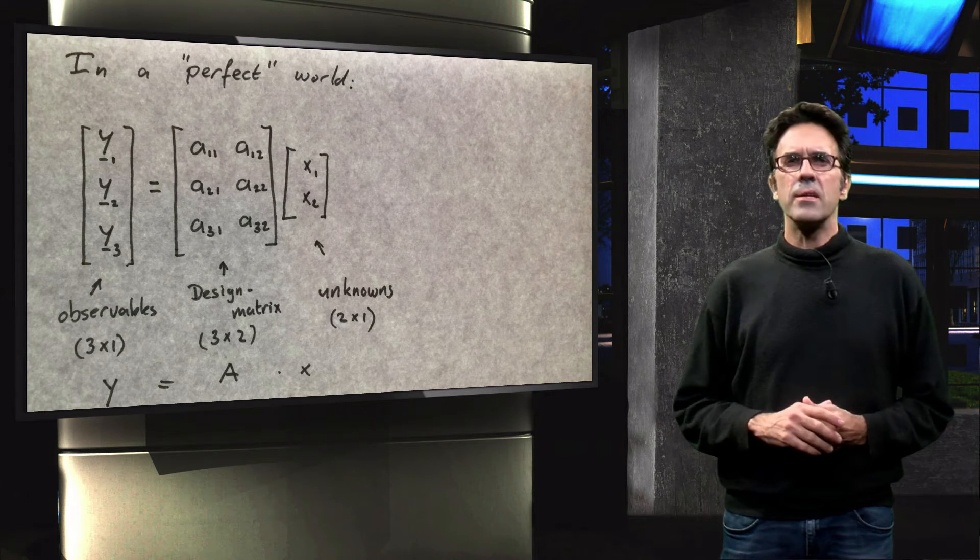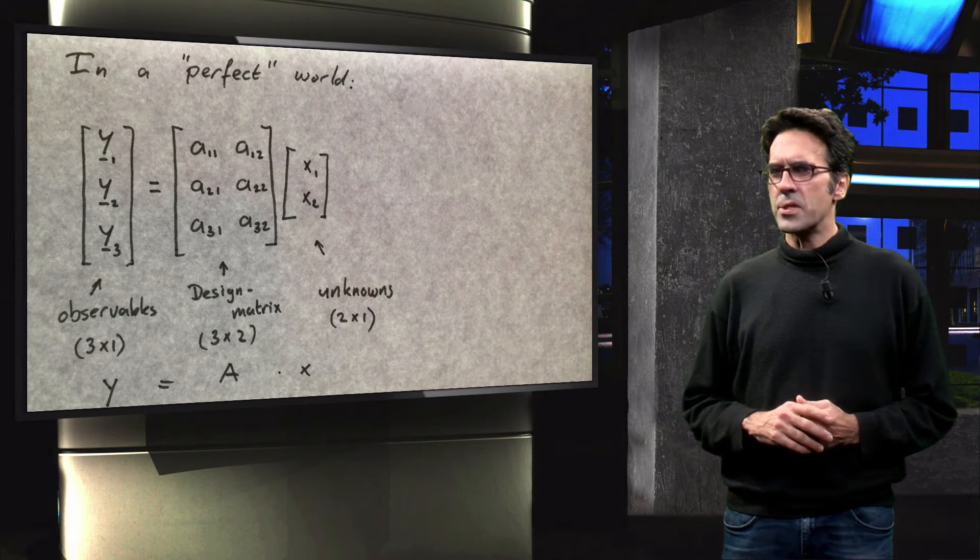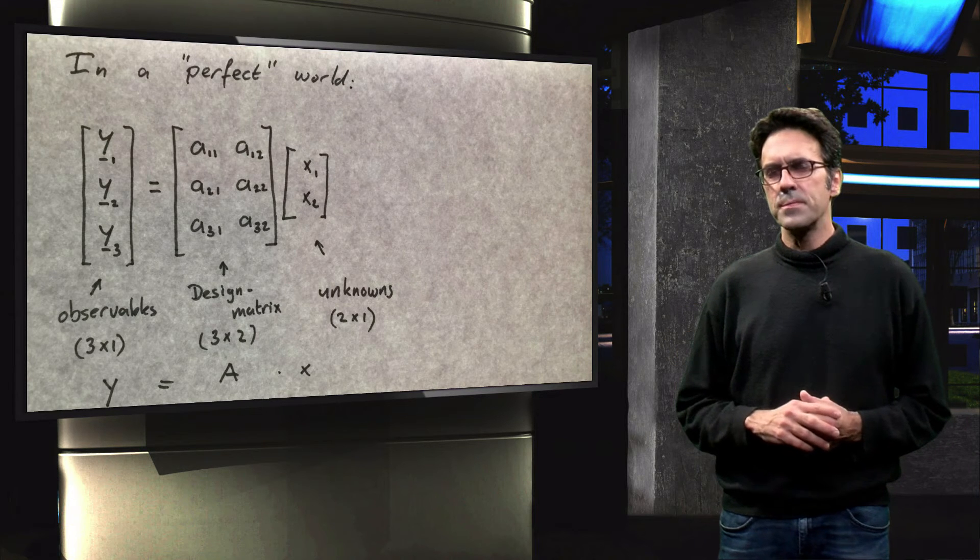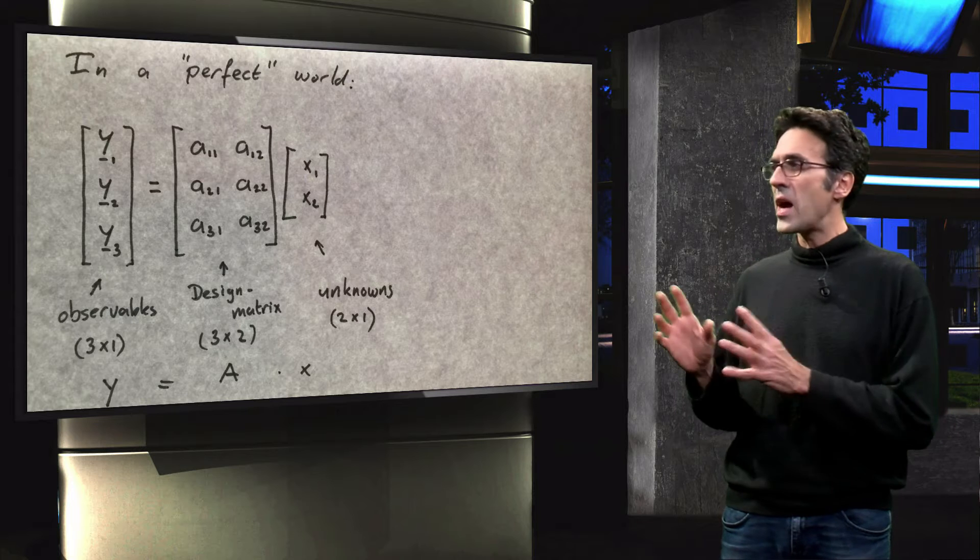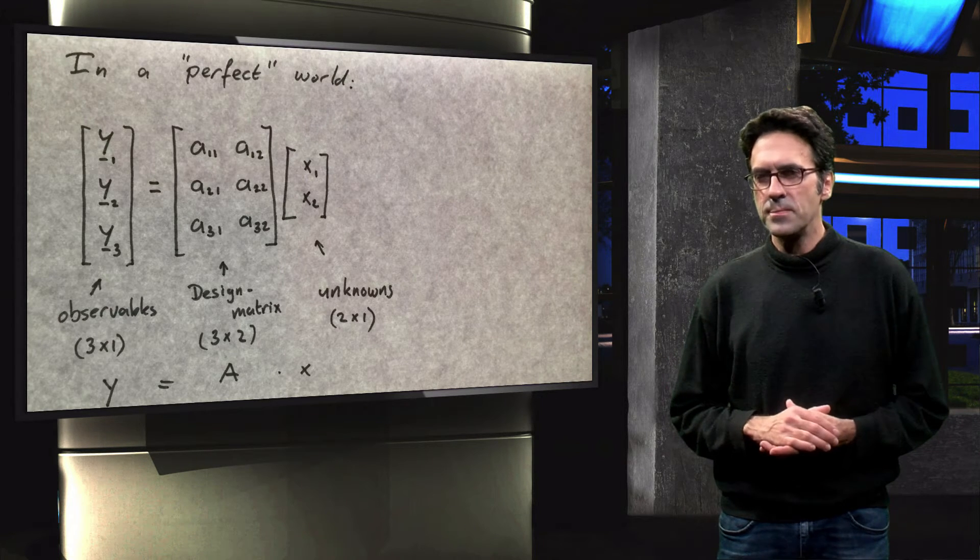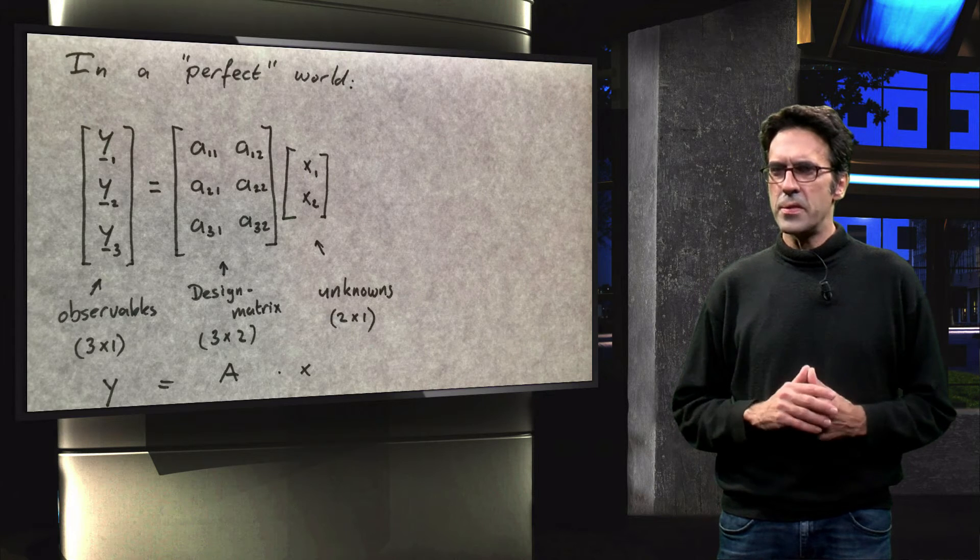On the left hand side of the equality sign the parameters are stochastic, as you can see from the line under the symbols. However, on the right hand side of the equality sign all parameters are deterministic. Obviously this is impossible.